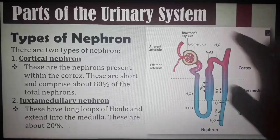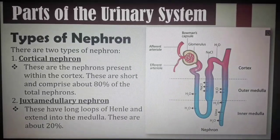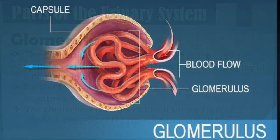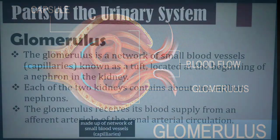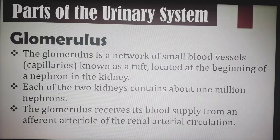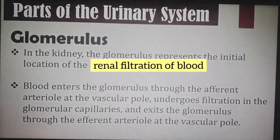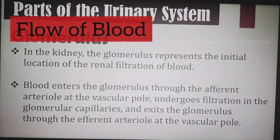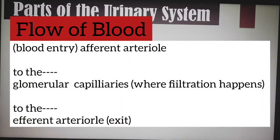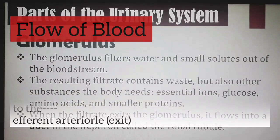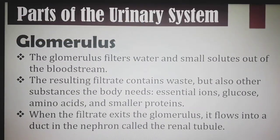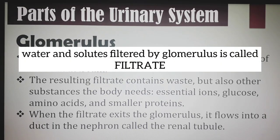The glomerulus is a network of small blood vessels, known as a tuft, located at the beginning of a nephron in the kidney. The glomerulus receives blood supply from an afferent arteriole. In the kidney, the glomerulus represents the initial location of renal filtration. Blood enters through the afferent arteriole at the vascular pole, undergoes filtration in the glomerular capillaries, and exits through the efferent arteriole. The glomerulus filters water and small solutes out of the bloodstream. The resulting filtrate contains essential ions, glucose, amino acids, and smaller proteins. When the filtrate exits the glomerulus, it flows into a duct called the renal tubule.